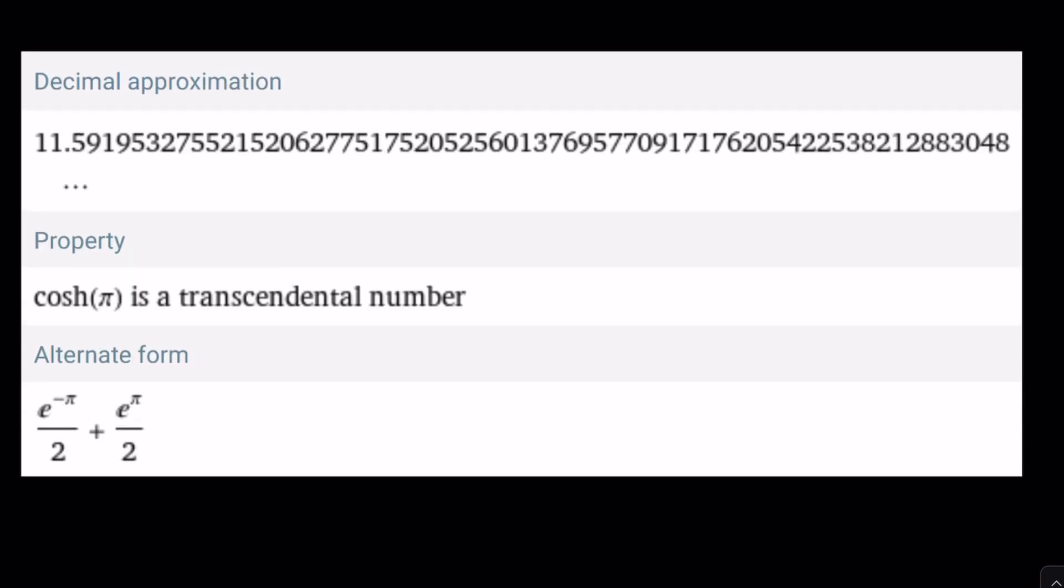So here's our number, e to the power negative pi plus e to the power pi all over 2 is approximately 11.591953275521520 and so on and so forth.